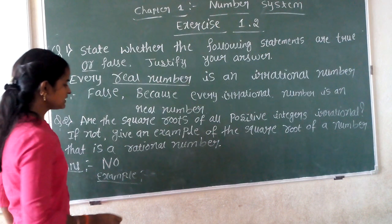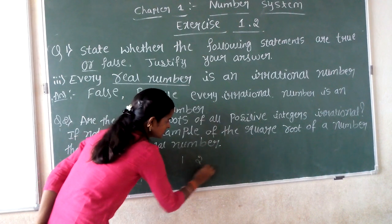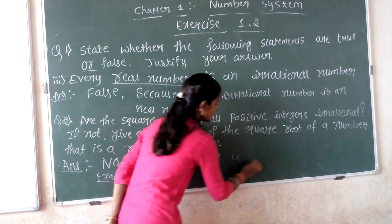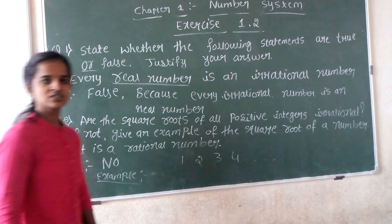We already know the positive integers means 1, 2, 3, 4, etc. These are all the positive integers.